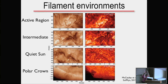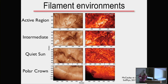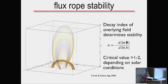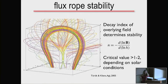This is a model of what a filament is: cool material suspended in concave upward dips of a twisted magnetic field. The colored lines are the magnetic field, and the blue solid color shows where there are dips where you'd expect to find a prominence — from a model by Ying Na Su. You can find these filaments in all sorts of environments on the sun: active regions, intermediate areas, the quiet sun, and near the poles — what we call polar crown filaments.